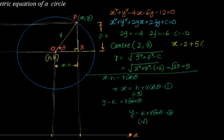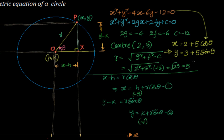Now with center 2 comma 3 and r equal to 5, the parametric equations are x equal to 2 plus 5 cos theta and y equal to 3 plus 5 sin theta. You can also verify this by converting back: x minus 2 equals 5 cos theta and y minus 3 equals 5 sin theta. Squaring and adding gives x minus 2 whole square plus y minus 3 whole square equals 5 square. This is how you convert from general form to parametric form, and also from parametric form back to standard form.